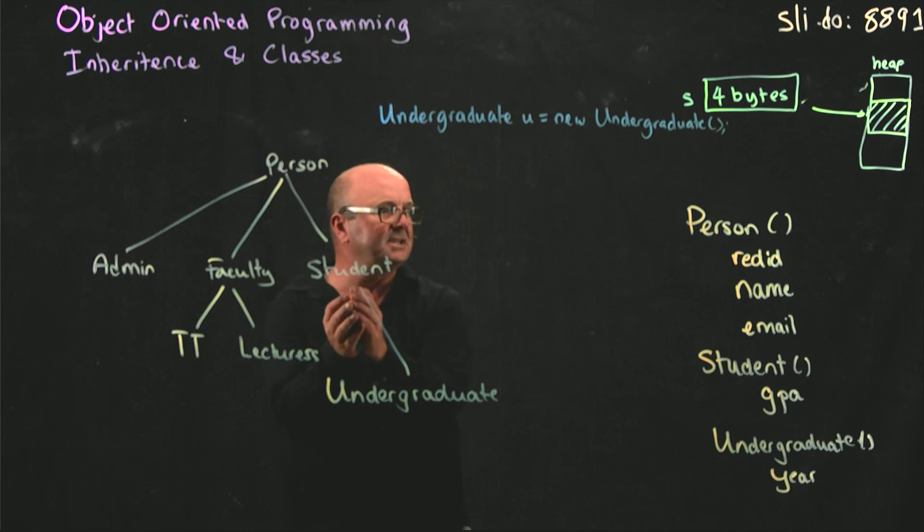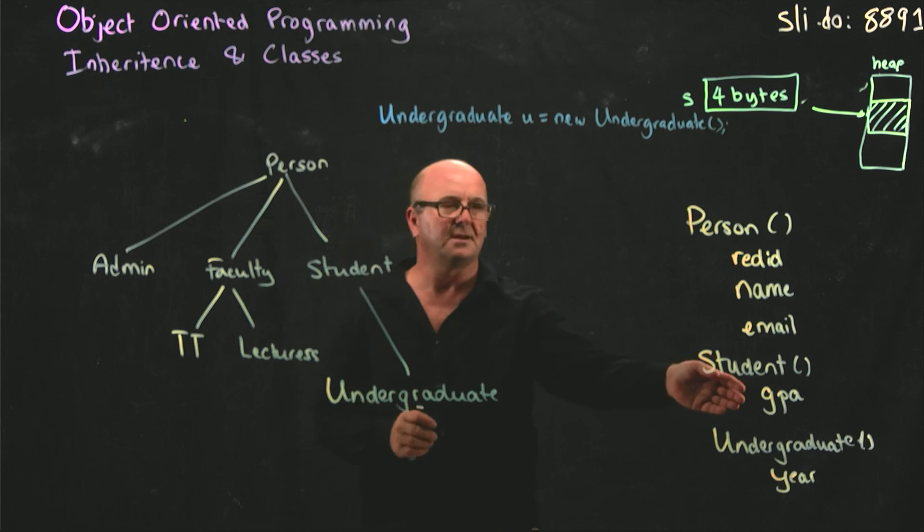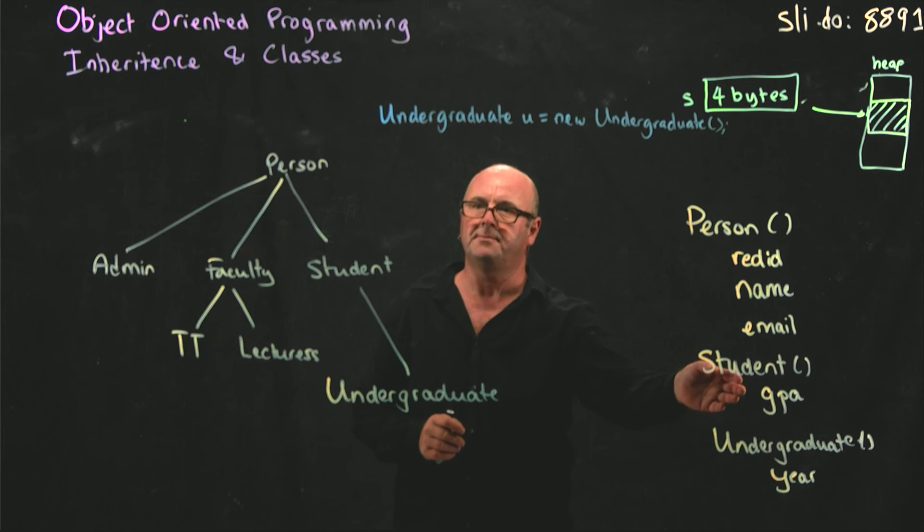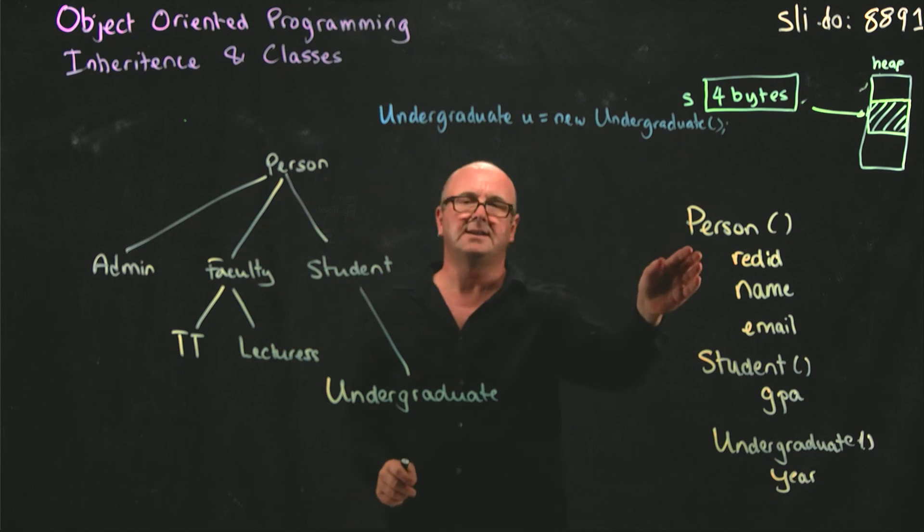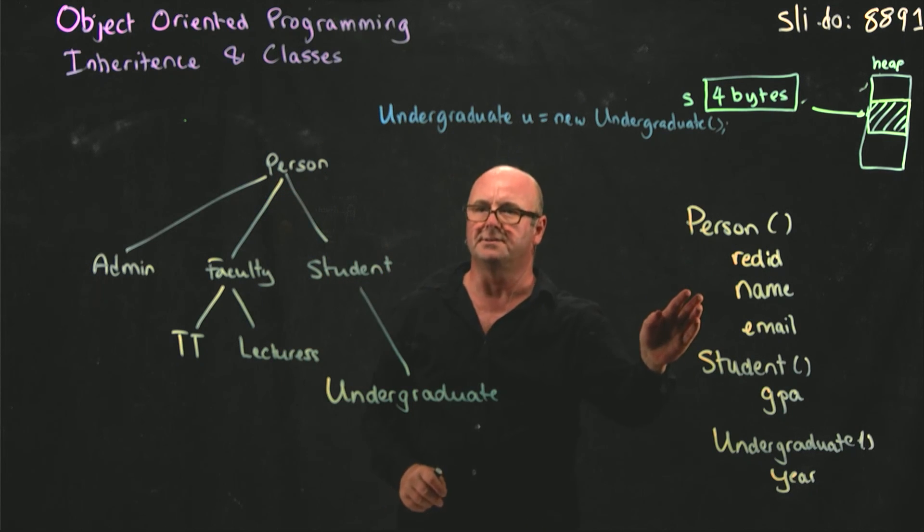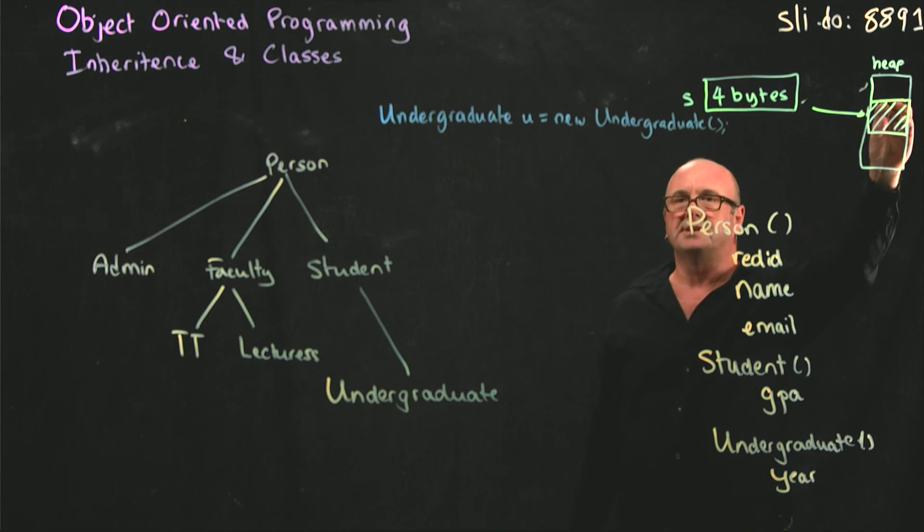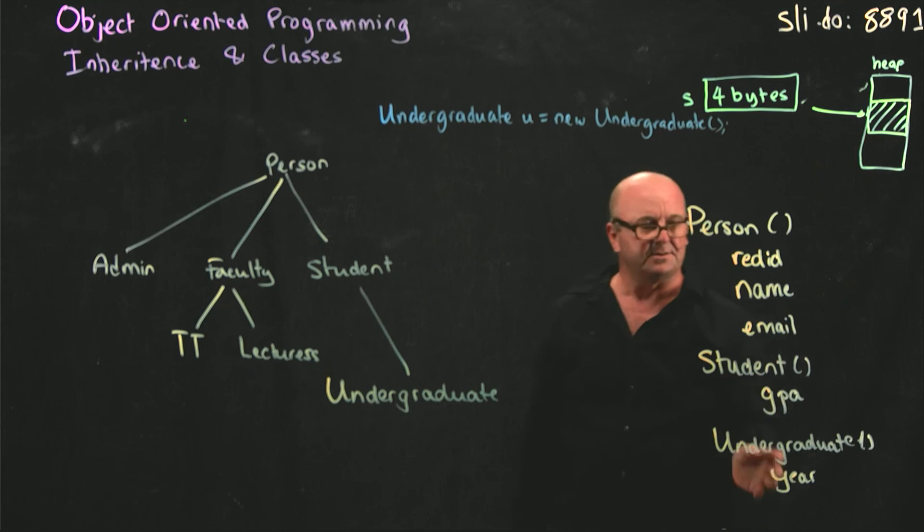It takes up space for all of the variables in student, like GPA, for example. And it takes up all of the variables in person, like red ID, name, and email, and so on. So all of that gets put into the heap. So we have enough space to store all of that information.